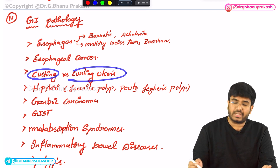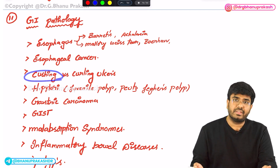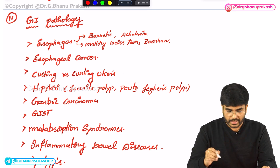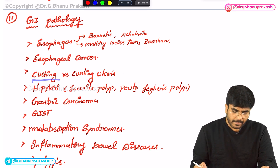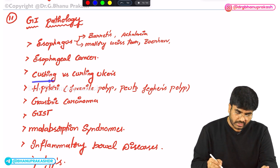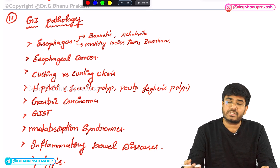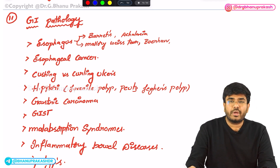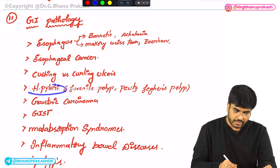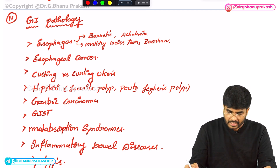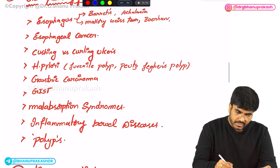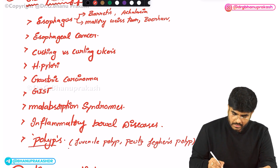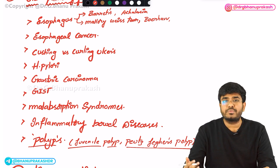You have to know about ulcers in the stomach: Cushing ulcers, which are seen with increased intracranial pressure, versus Curling ulcers, which are seen in burn patients due to volume loss and hypovolemia. Know everything about Helicobacter pylori causing gastritis and ulcers in the stomach, including the stains used for H. pylori. You also have to know about polyps — different types like juvenile polyps and Peutz-Jeghers polyps. These polyps are important for the exam.